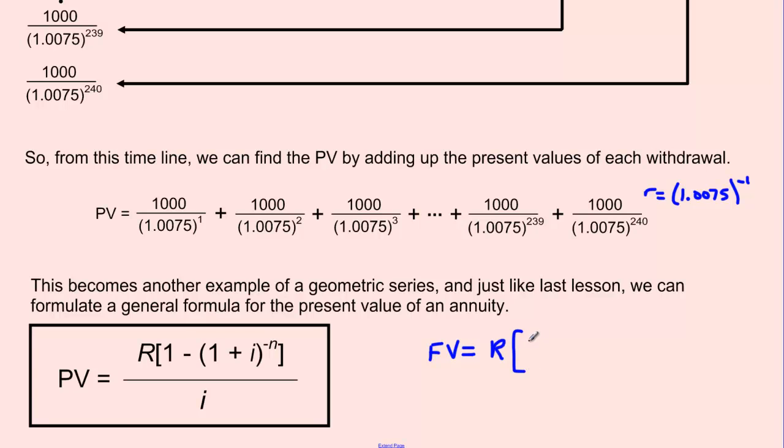We still have that R there, but the one big difference is for figuring out the future value, or any time that we have regular deposits, the 1 plus i portion of the formula comes first and it's to the exponent positive n. Whereas you look at this one, the 1 minus comes first, and then it's to the exponent negative n. This is the big and only difference, the order in which those things are written. Each of them has an R that's being multiplied by, each of them is divided by i. So notice that difference.